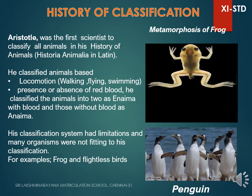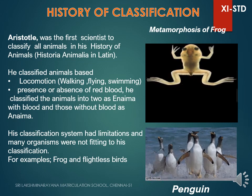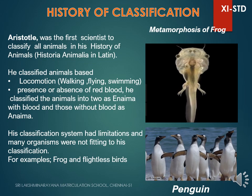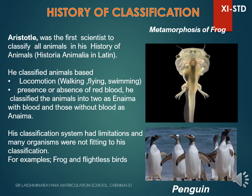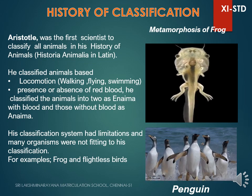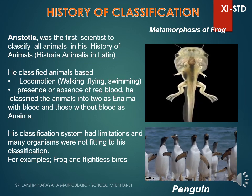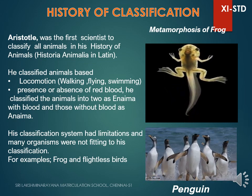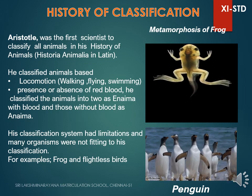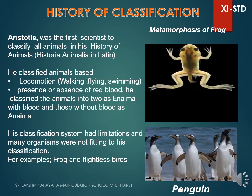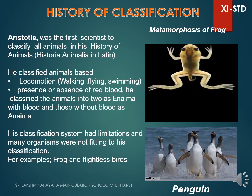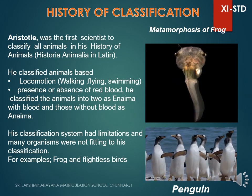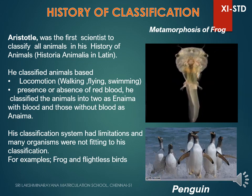Also, he classified organisms based on locomotion, taking only a single characteristic feature — the flying ability. So, how can we place butterfly, birds, and bat under one category? And also, he didn't classify flightless birds like ostrich, emu, or penguin, meaning Aristotle would not have classified them as birds.